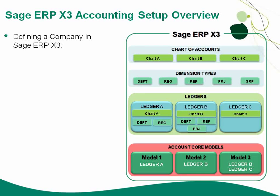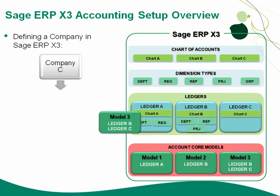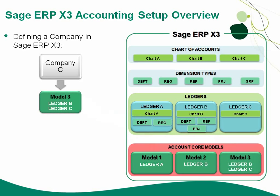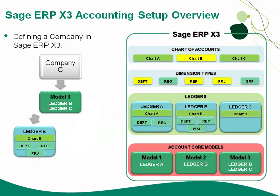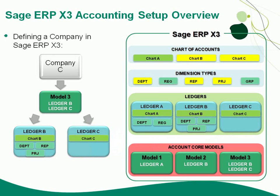Remember that Sage ERP X3 offers a multi-ledger environment as well. So in the case of company C, I may want to use account core model 3 so that I can have two separate charts of accounts — one to track department, region, and projects, and another for legal or government reporting — giving great flexibility in the accounting structure for a particular company.